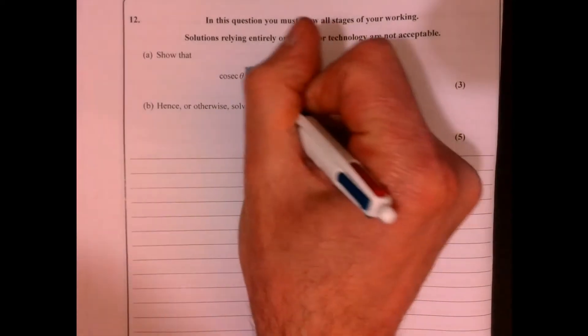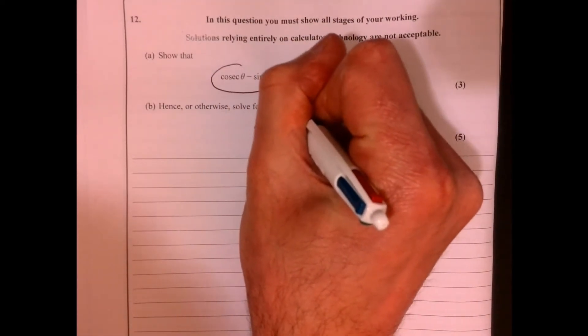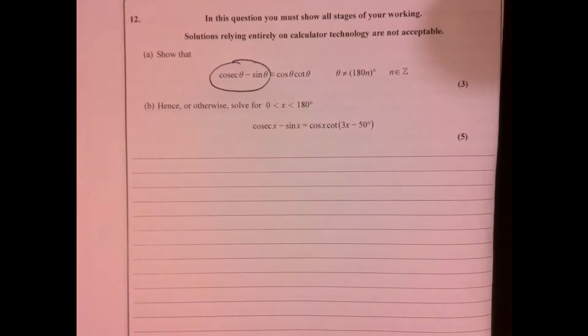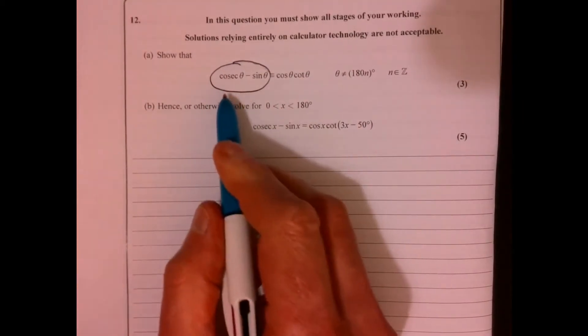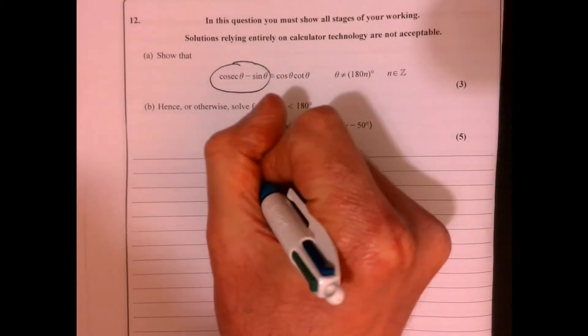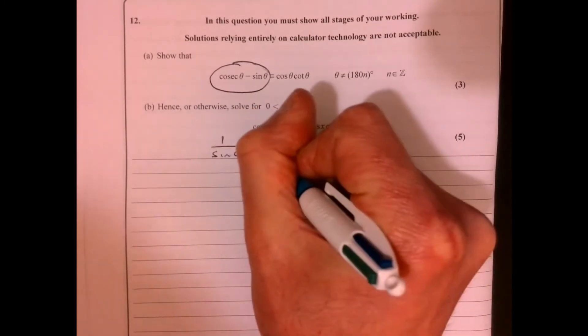Question 12. So let's start off by looking at this left-hand side. So cosec is 1 over sin theta.